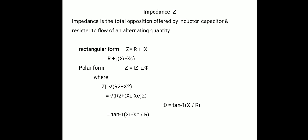So impedance is the total opposition offered by resistor, capacitor and inductor to flow of alternating current. The amount of opposition offered by all these three components to flow of alternating current — that value of opposition is called the impedance, and the notation of impedance is Z.